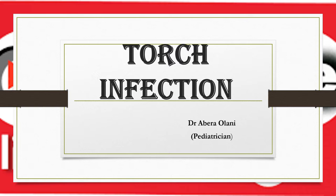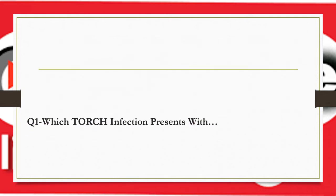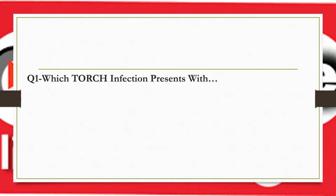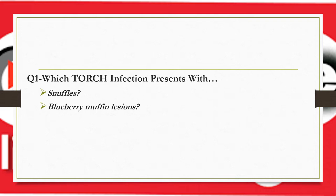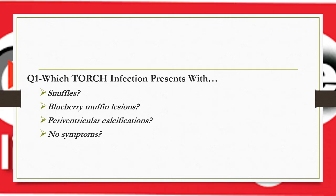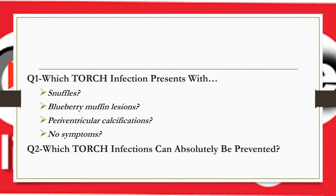Welcome back everyone. Today's lesson is about TORCH infection in children. I will start with some quiz questions. The first quiz is: which TORCH infection presents with snuffles? Which presents with blueberry muffin lesion? Which presents with periventricular calcification? And which can be asymptomatic at all?